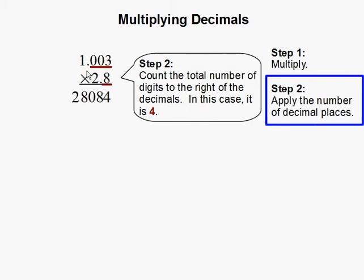We're going to count the numbers to the right of the decimal. There's 1, 2, 3, and then there's 1. So together, there's 4 digits to the right of both decimals that we multiply.